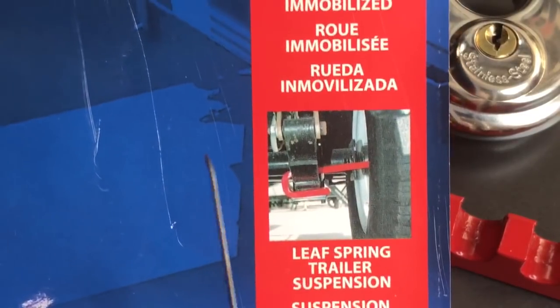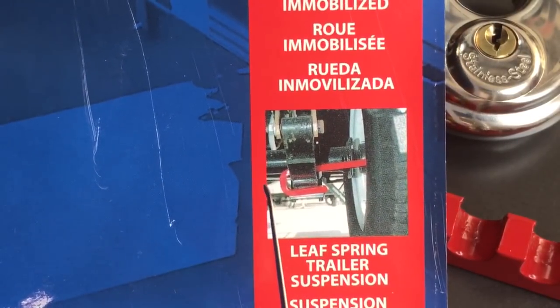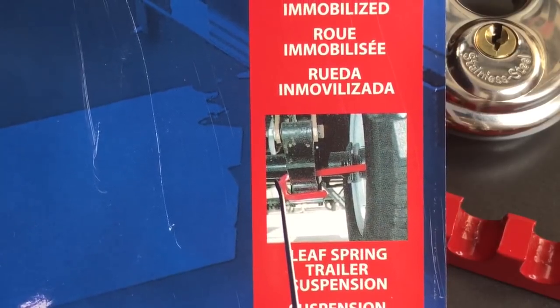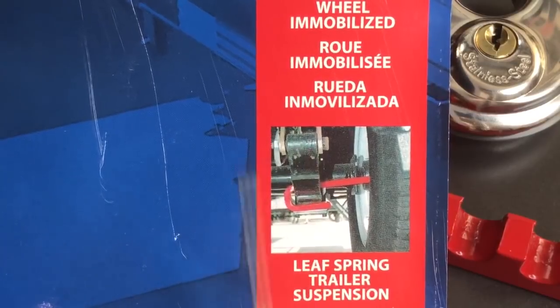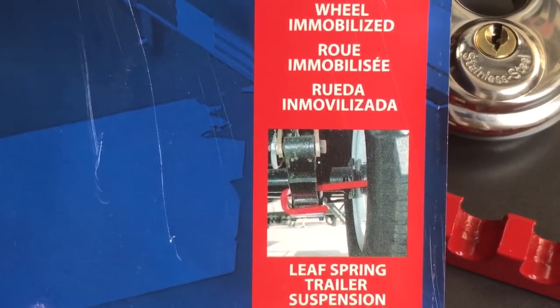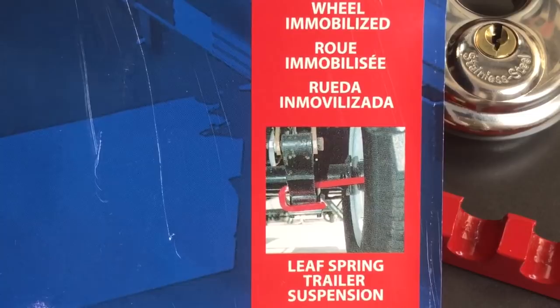Now one thing I noted when I saw this particular picture is the possibility of removing this lock by taking out the bolt that's on the end of the leaf spring. I suppose that would depend on the individual trailer and how much load it was under.